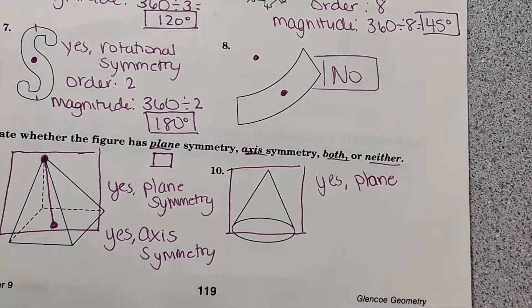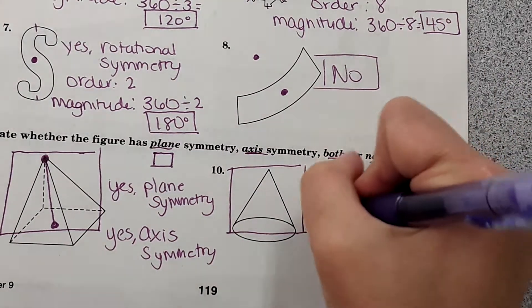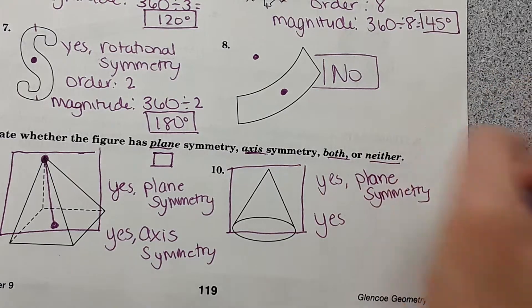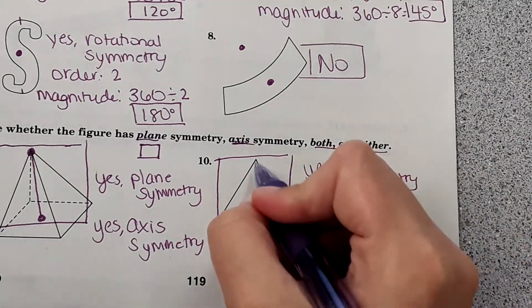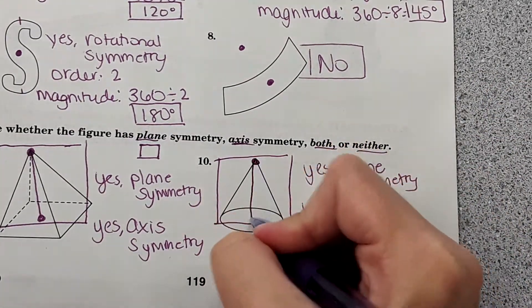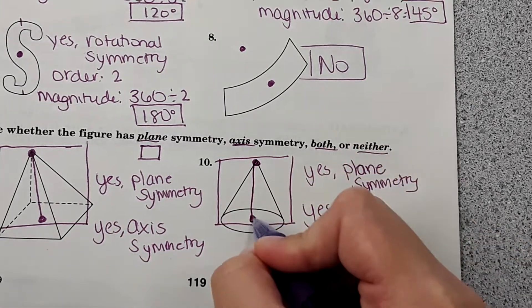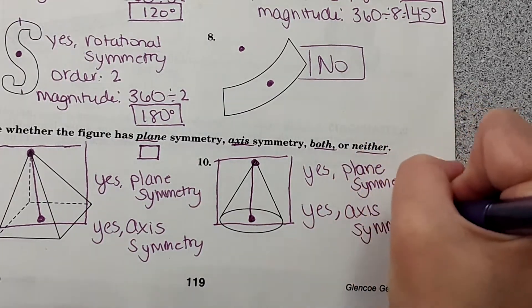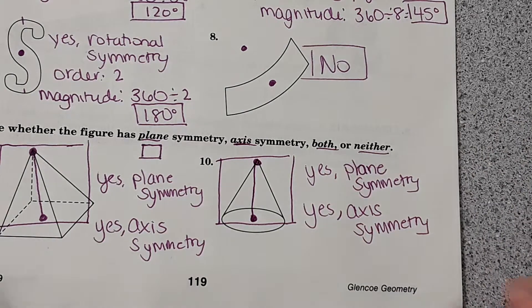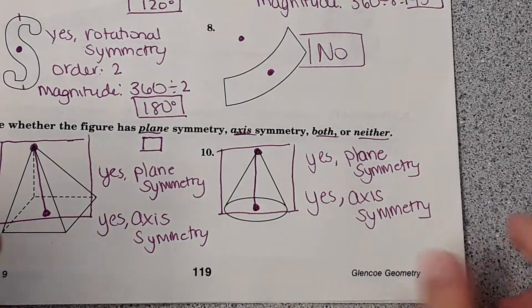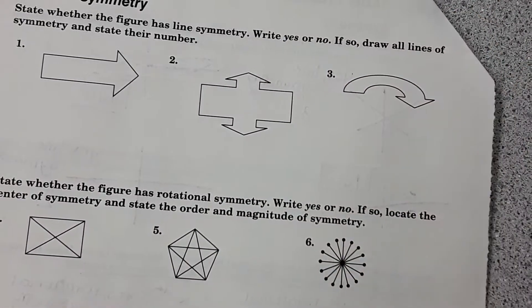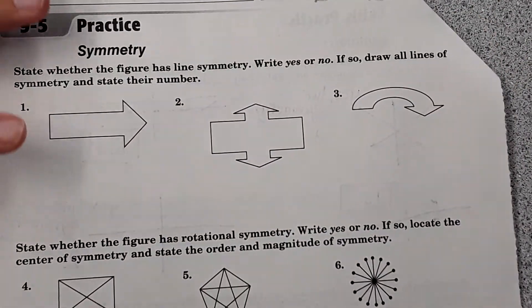Number ten — draw the plane: it slices this exactly in half, so yes to plane symmetry. Then axis symmetry — if you draw an axis through the center, could you rotate it onto itself without going all the way around? Yes, you could, so it has axis symmetry as well. We're just doing these two problems here — dilations is tomorrow's lesson.